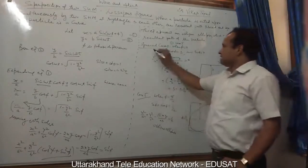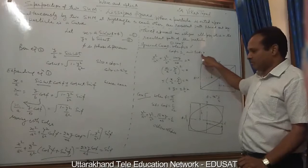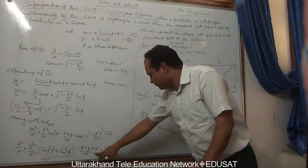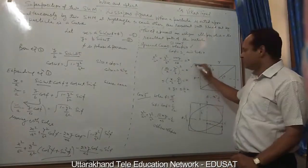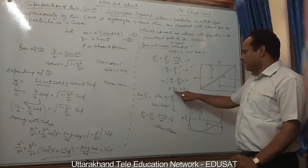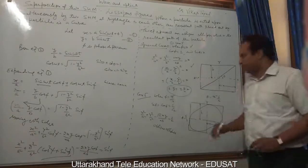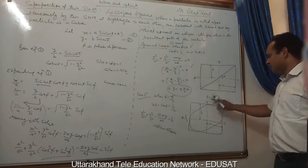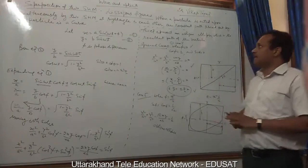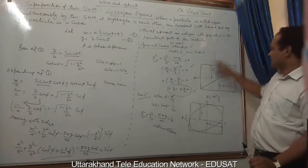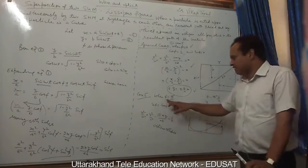Case 1: When φ = 0, cos(φ) = 1 and sin(φ) = 0. The equation reduces to (x/a − y/b)² = 0, giving x/a = y/b, or y = (b/a)x. This is the equation of a straight line with inclination angle θ = tan⁻¹(b/a). So when two waves are at right angles with zero phase difference, the resultant path traced is a straight line.